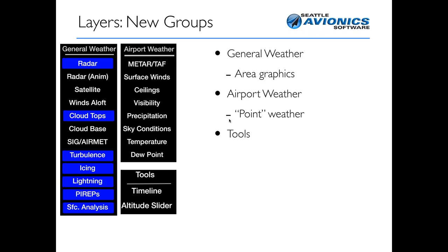The third category is a functional one where we add a way to use the timeline and altitude slider — so that's why we're adding a new category called Tools. A third item also planned, though not shown in the demo today, is a weather key or weather legend that tells you what all the colors and symbols mean. So when you look at all those colors, you can make some sense of them.